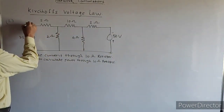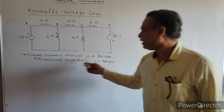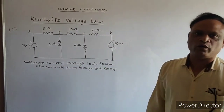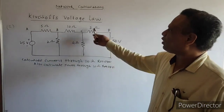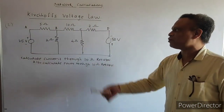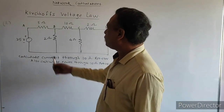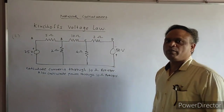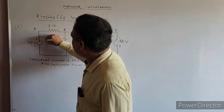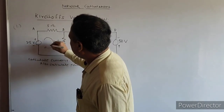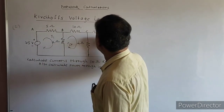Let us mark the points: A, B, C, and D. The question can be: calculate the current through the 10 ohm resistor, the power through the 10 ohm resistor, the current through the 4 ohm resistor, and so on. Since this is mesh analysis with three loops, we assume three currents: I1 for loop 1, I2 for loop 2, and I3 for loop 3.